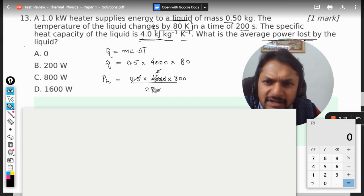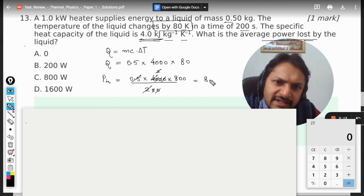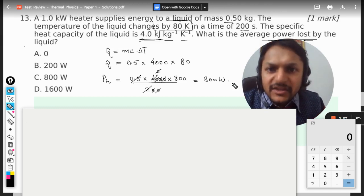Everything gets cancelled out and 800 watt is the power that is consumed by the liquid to increase the temperature by 80 kelvin.